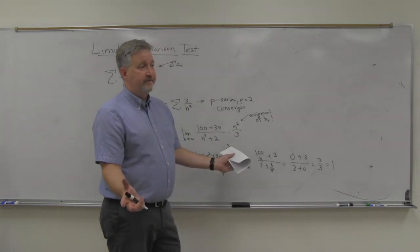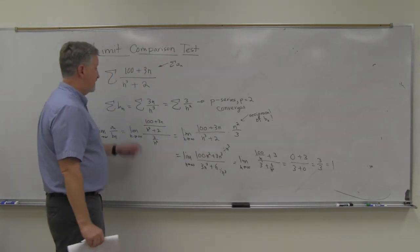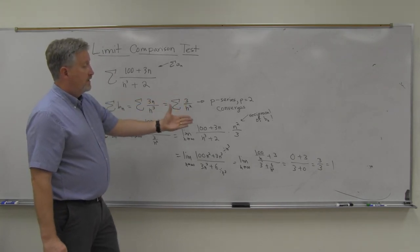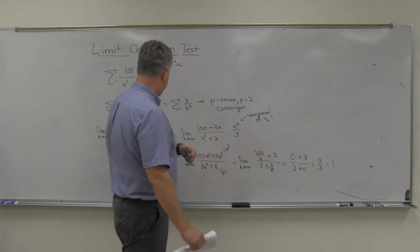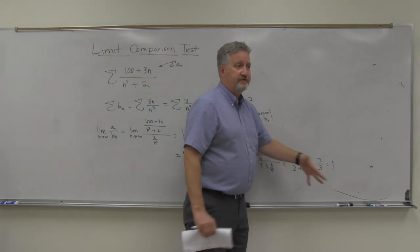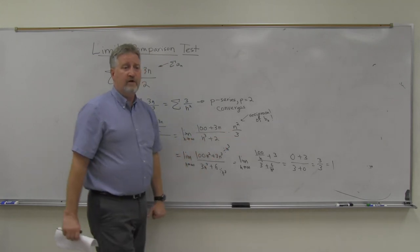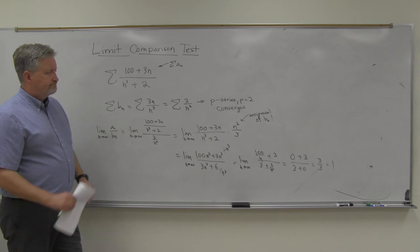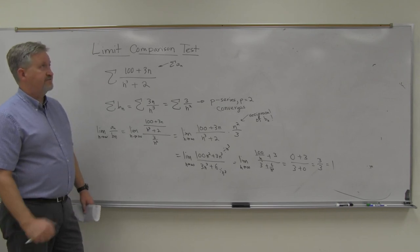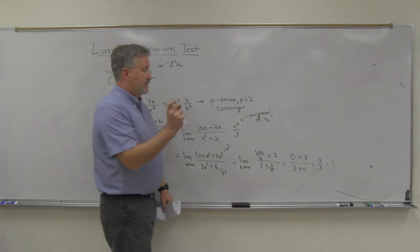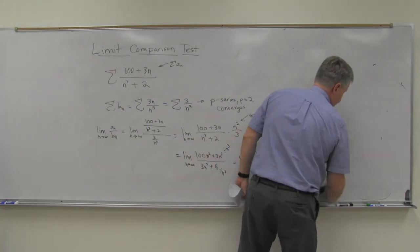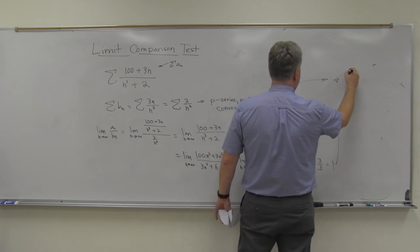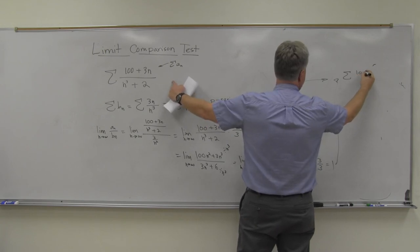The limit is 1 — a finite number greater than zero. A lot of times if you choose b_n by the leading terms like this, you'll get 1, but any positive finite number works. Since b_n converges and the limit is finite and greater than zero, the a_n series converges too. The series (100 + 3n)/(n³ + 2) converges by the Limit Comparison Test.